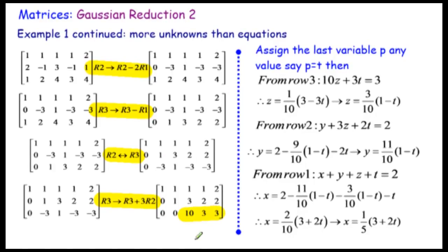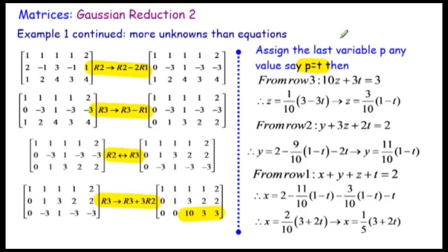We end up with the situation where we have 10 lots of z plus 3 lots of p equal to 3. I've let p be some value — let p equal t, some parameter like 2 or 3 or whatever. Then we can get z in terms of t, and from that we can work out a y value and an x value. This is a general solution with the parameter t in it.